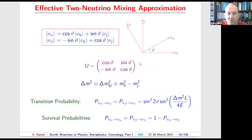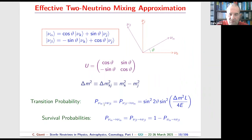To understand the effect of oscillations, it is often convenient to adopt the two-neutrino mixing approximation. In this case we consider the mixing of two flavors, alpha and beta, with only two massive neutrinos. The mixing matrix is simply a 2×2 orthogonal rotation parametrized by a mixing angle theta, and there is only one delta-m squared.